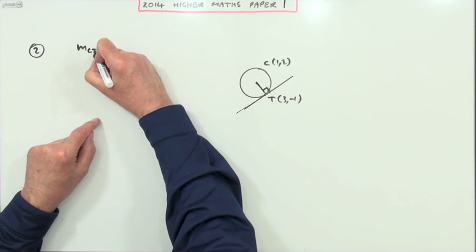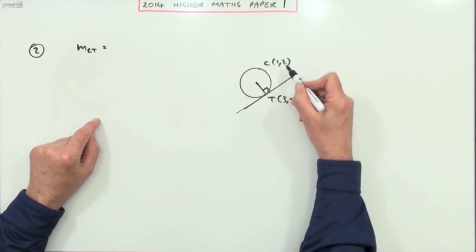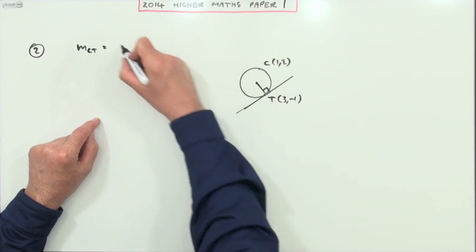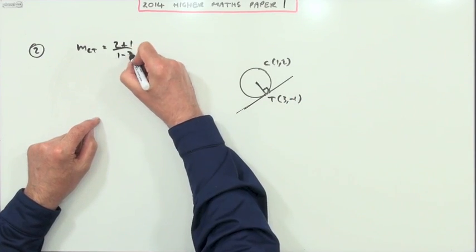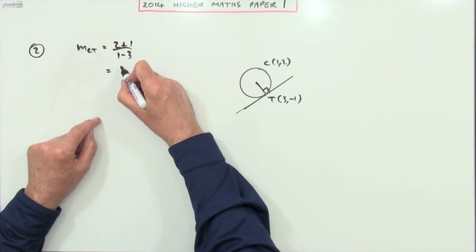That's the gradient of CT. That'll be the difference in the y-coordinates: 2 take away -1, that's 2 plus 1, and 1 take away 3 for the x. So that's 3 upon -2, that's -3 upon 2.